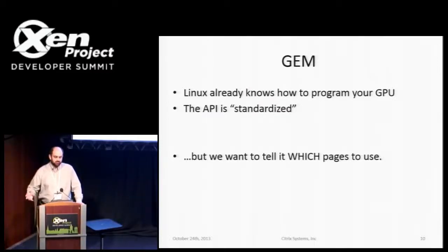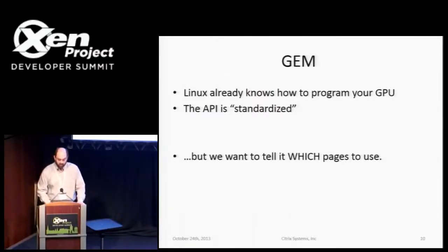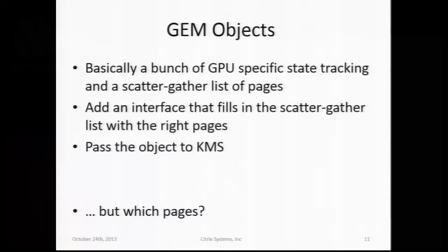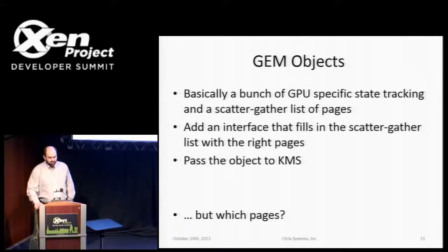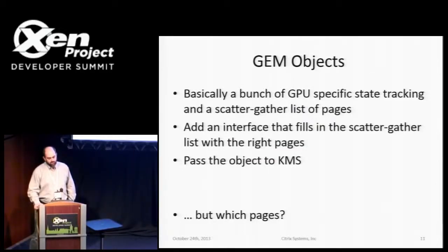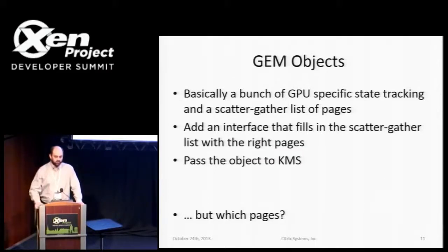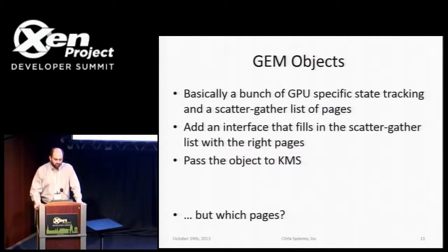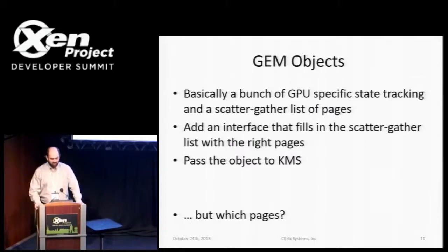The trick with GEM is that it can give you memory to write to your GPU, but we don't just want any memory — we want to specify which memory to use. A GEM object contains GPU-specific information behind the scenes for managing state inside the driver, plus a scatter-gather list of the pages that make up the pixels in the object. Those pages are filled in with functions already hooked in GEM, so it's relatively easy to add a new get_pages and put_pages call to fill in the scatter-gather list with the right pages. You then pass the object to KMS, the kernel sets the mode to point to that frame buffer, and you're done.